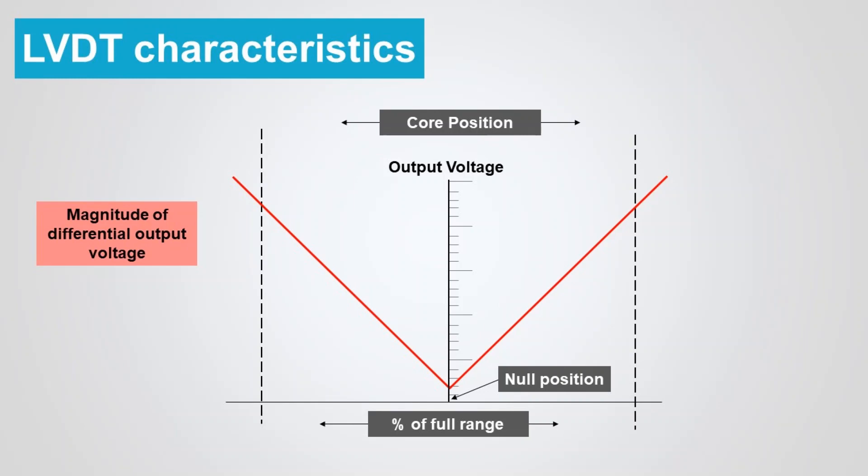The magnitude of the differential output voltage varies with the core position. The value of output voltage at maximum core displacement from null depends upon the amplitude of the primary excitation voltage and the sensitivity factor of the particular LVDT, but is typically several volts RMS.